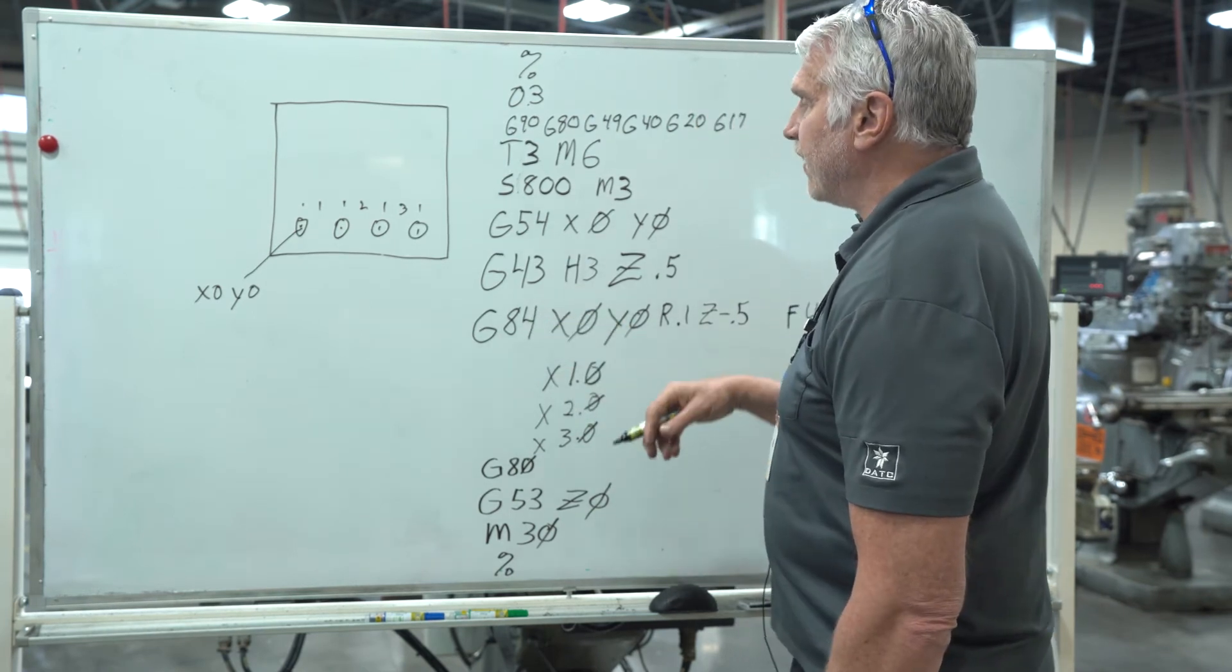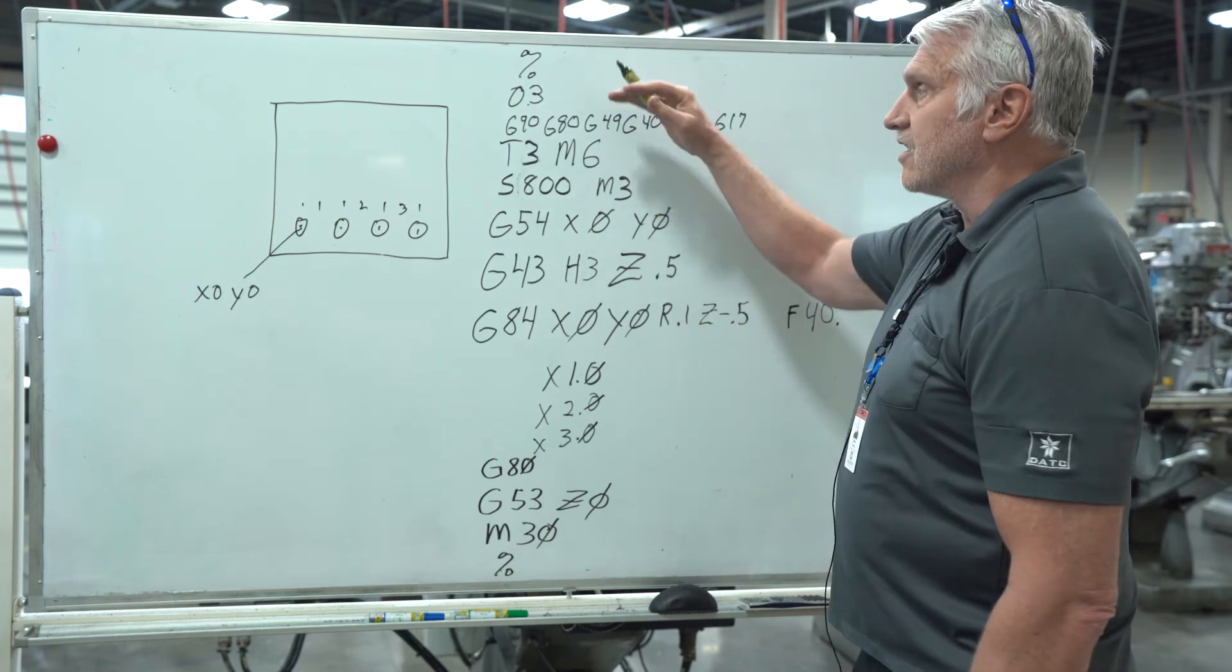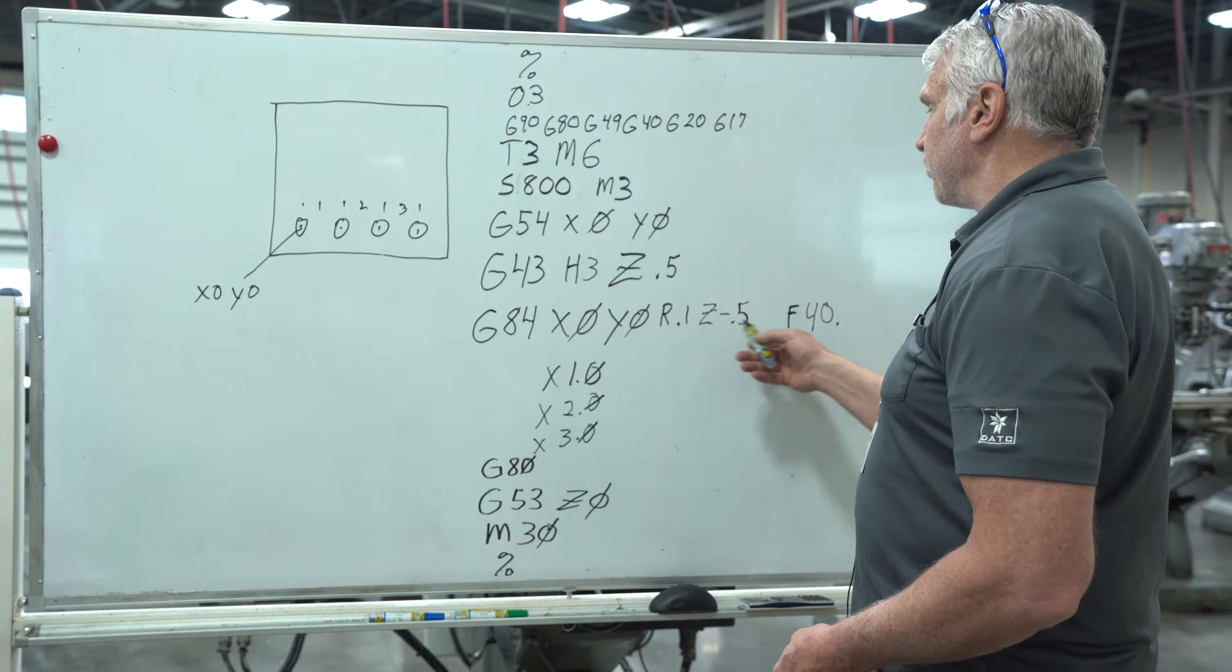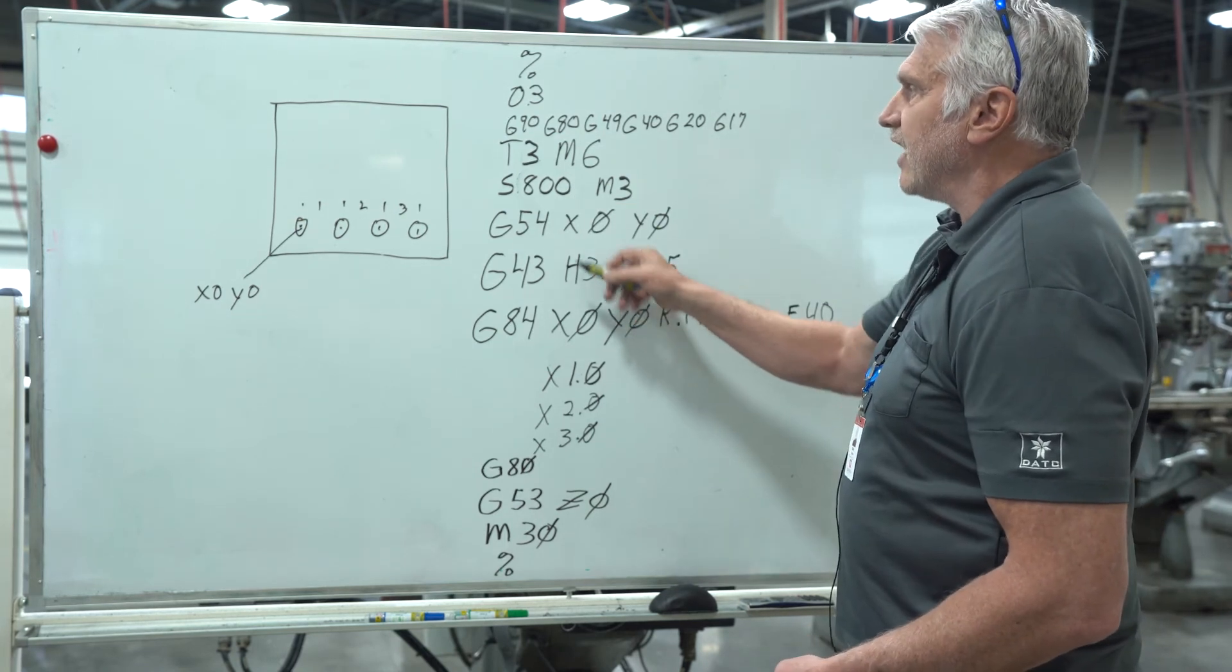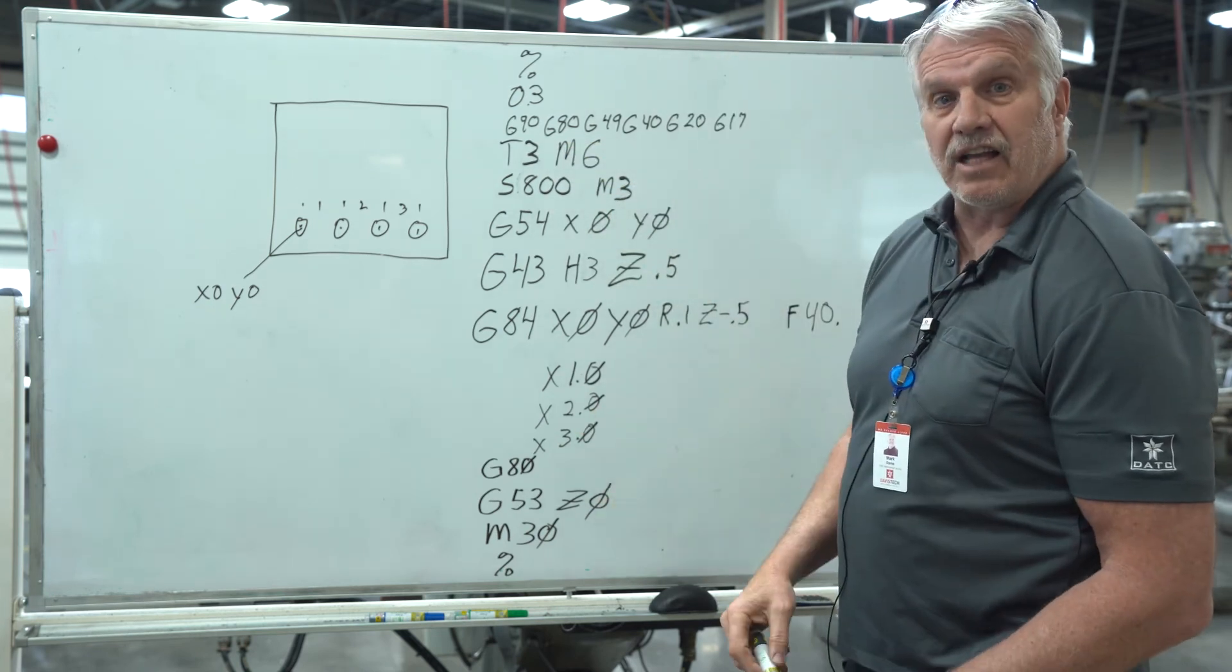So we've basically center drilled, drilled, and this is the tapping cycle. So a G84, how deep we're going, our feed rate, our spindle speed, our height offset and the tool number, everything else remains the same for the canned cycle.